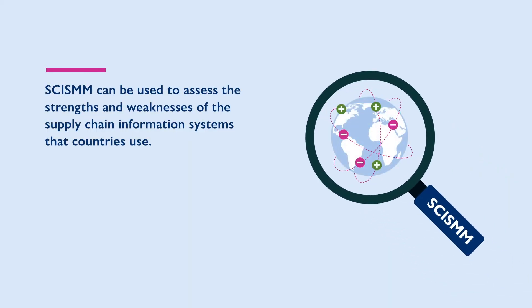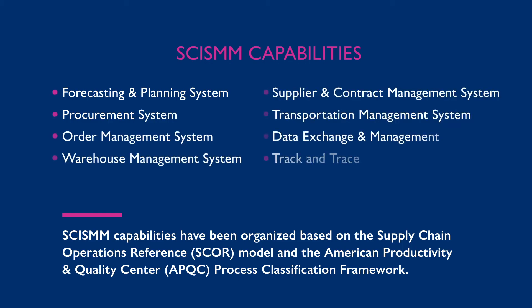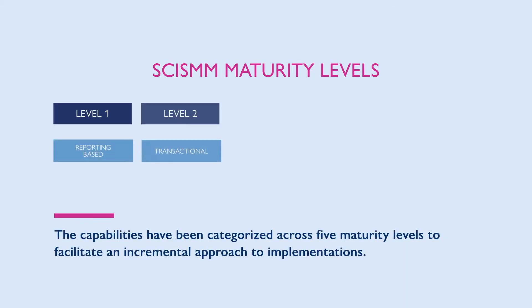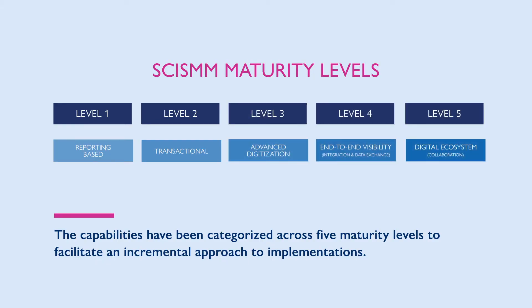SCISM can be used to assess the strengths and weaknesses of the supply chain information systems that countries use. SCISM capabilities have been organized based on the Supply Chain Operations Reference SCOR model and the American Productivity and Quality Center APQC process classification framework. The capabilities have been categorized across five maturity levels to facilitate an incremental approach to implementations.